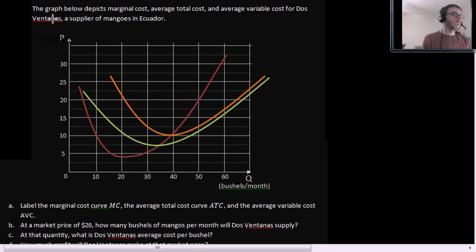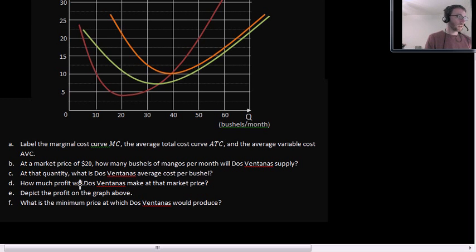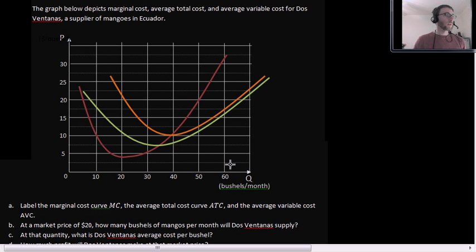In my class we had a few people who struggled with this problem. So today we're going to take a look at it and see if we can't try to make some headway. This is the problem as we receive it. The graph below depicts marginal cost, average total cost, and average variable cost for Dos Ventanas, a supplier of mangoes in Ecuador.